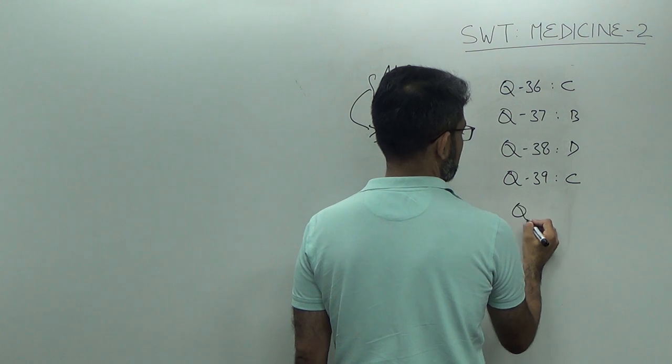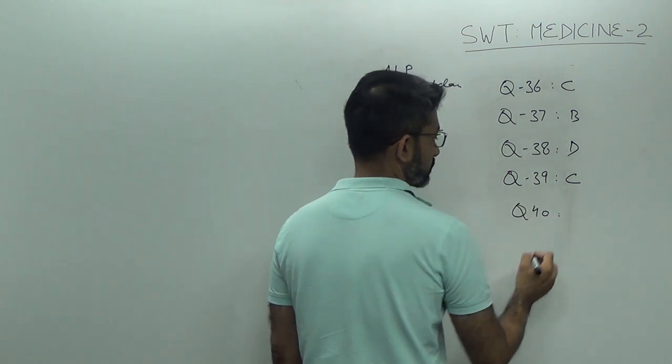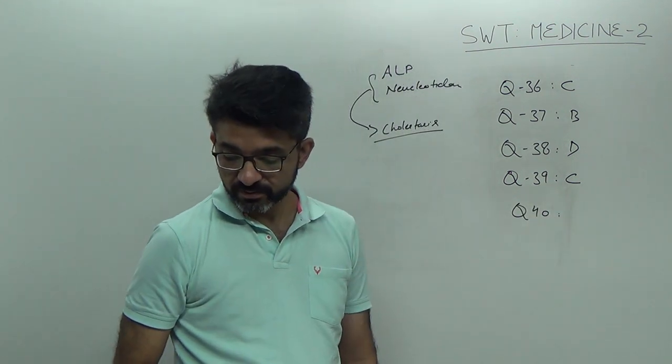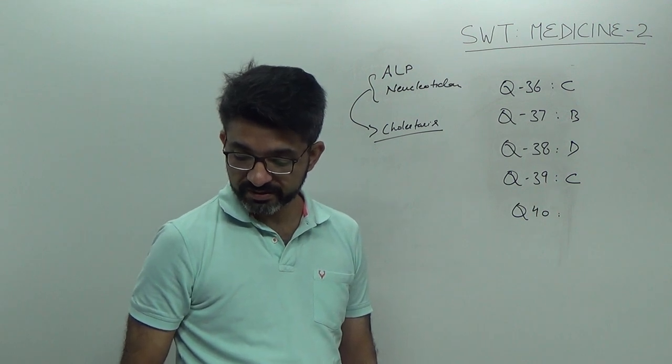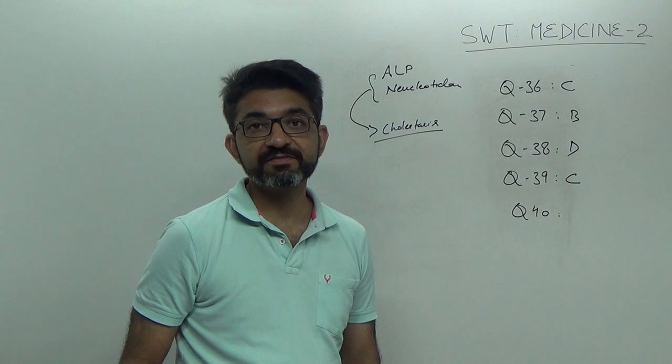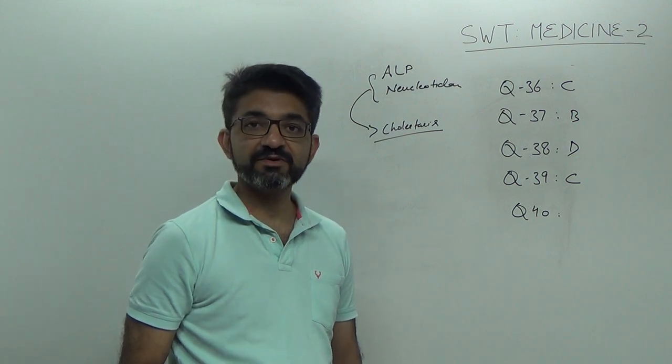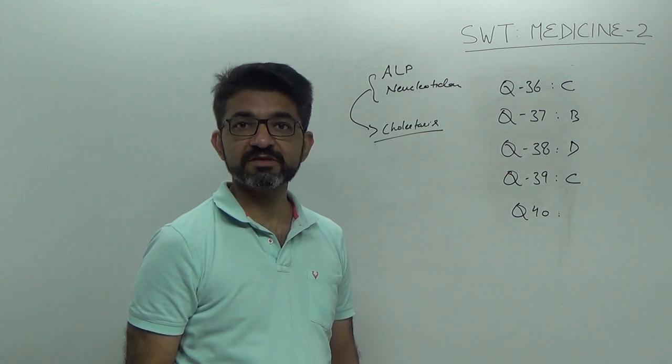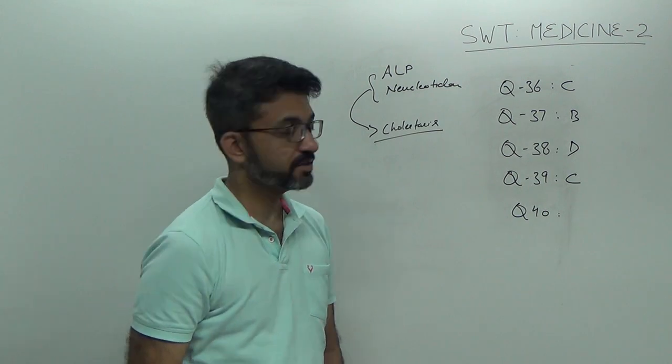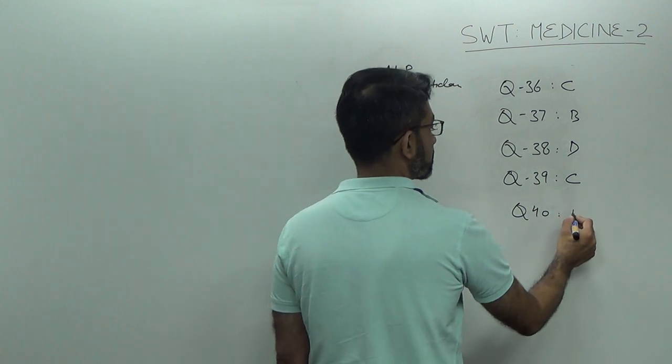Question number 40. So, this patient has raised SGOT, SGPT and remarkable alkaline phosphatase. So, whenever we encounter a patient in whom we suspect cholestasis, the investigation of choice is ultrasound of the abdomen. The answer is A.